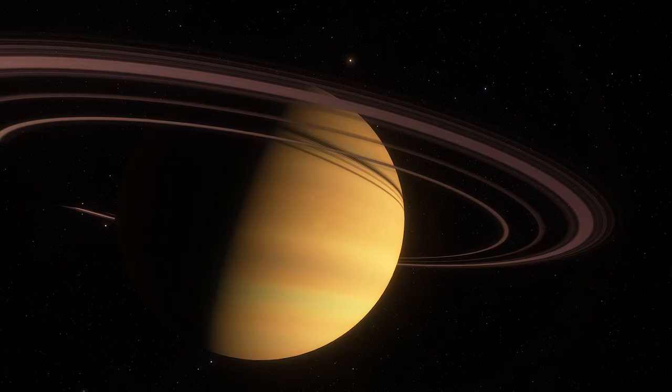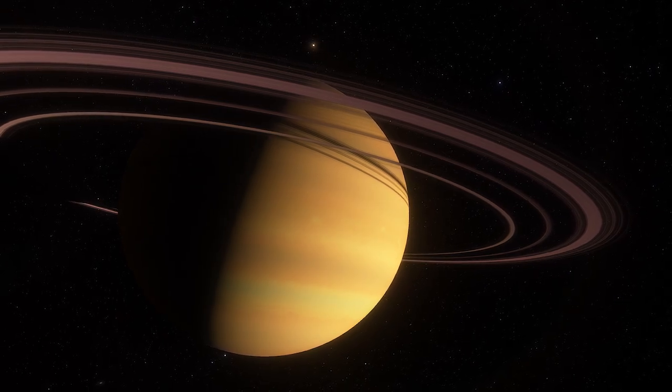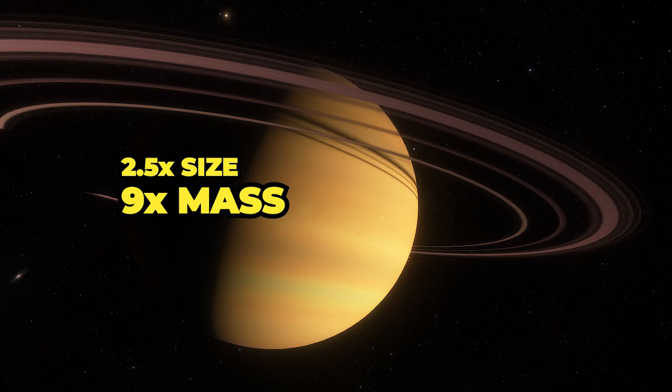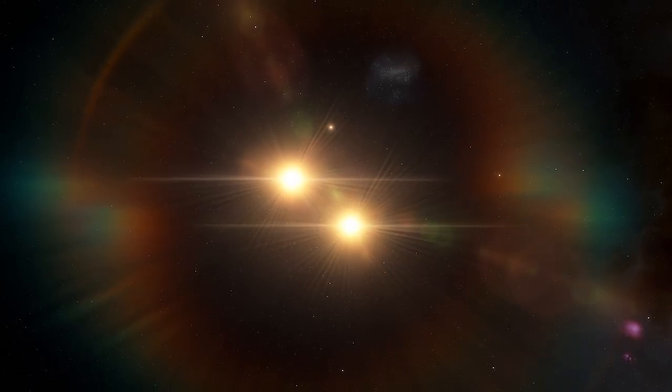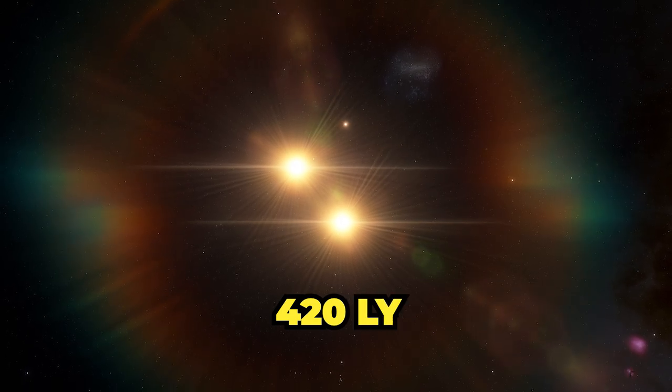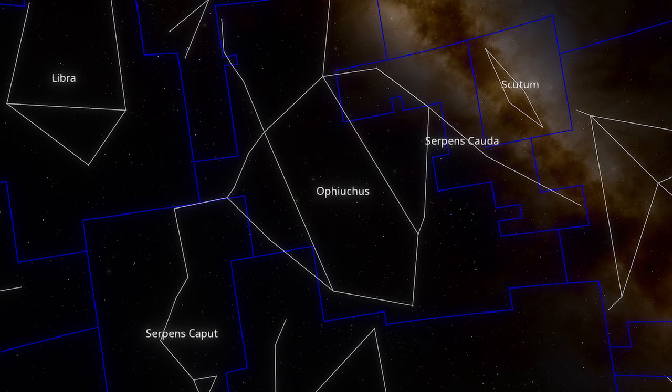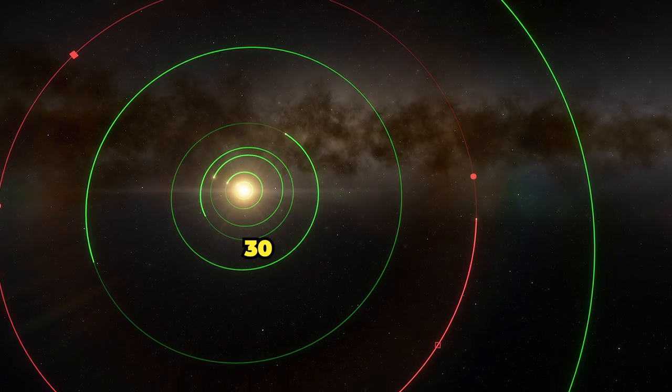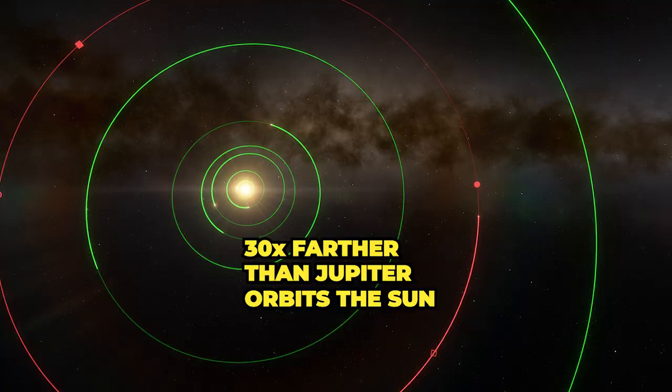Jupiter is nothing compared to ROXS 42BB exoplanet, which is 2.5 times bigger and 9 times more massive. The exoplanet is part of a double-star system, located about 420 light-years from us in the direction of the Ophiuchus constellation. It orbits its binary star 30 times farther away than Jupiter orbits the Sun.